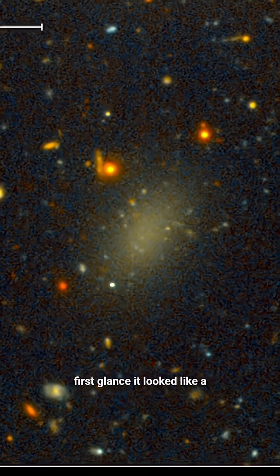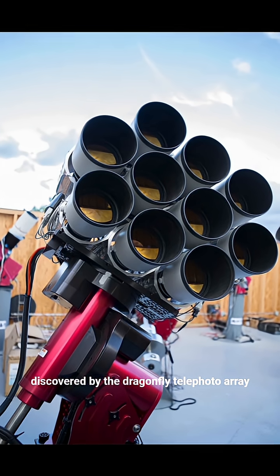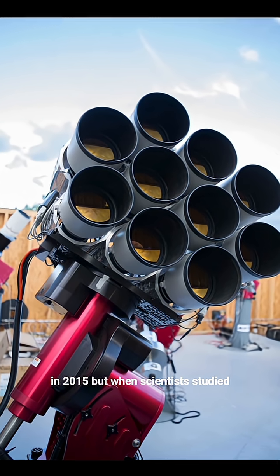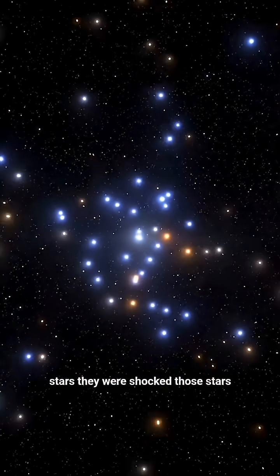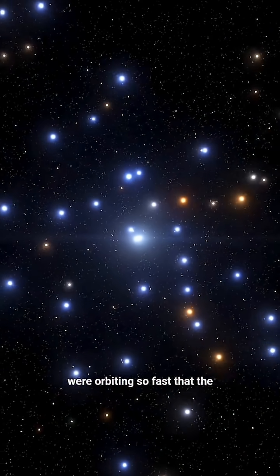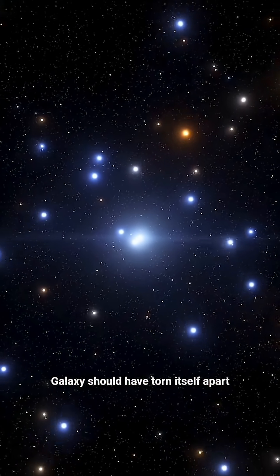At first glance, it looked like a faint smudge of light, almost invisible, discovered by the Dragonfly telephoto array in 2015. But when scientists studied the motion of its few visible stars, they were shocked. Those stars were orbiting so fast that the galaxy should have torn itself apart.